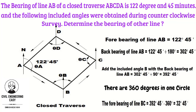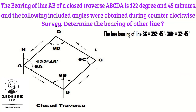That's how we find out the bearing of a line from the included angle. To find the backbearing of line BC, add 180 degrees to 32.45 min. The answer will be equal to 212.45 min, which is the backbearing of line BC.